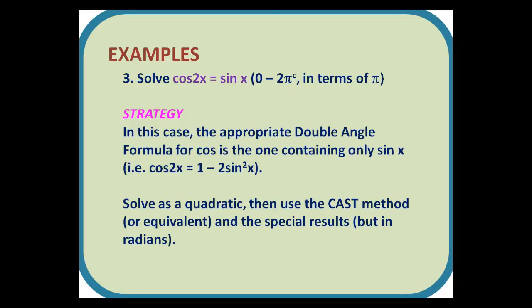Number 3. Solve cos 2x = sin x, again between 0 and 2π radians, but this time in terms of π. Strategy: In this case, the appropriate double angle formula for cos is the one containing only sin x, i.e. cos 2x = 1 - 2sin²x. Solve it as a quadratic, then use the CAST method or equivalent, and the special results but in radians.